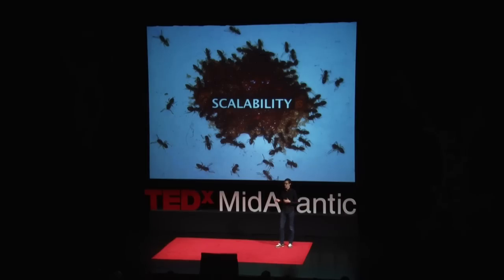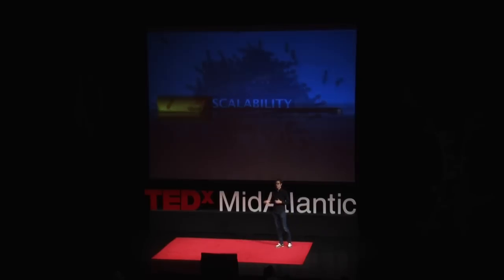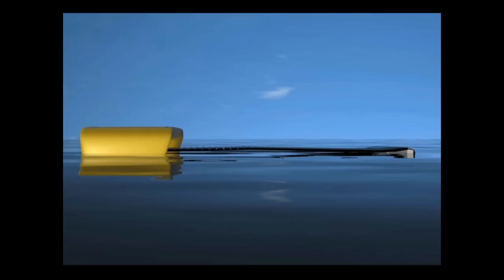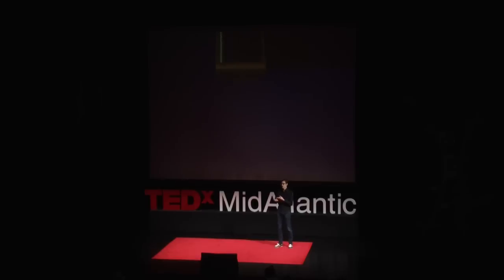So we can take the same swarming behavior that we're seeing in nature and apply it to robots. We can use algorithms and sensors, Wi-Fi and GPS. Just like ants, the robots can operate as a single entity or they can come together as a swarm and they can share information with each other. They can share things like weather patterns and oil spill locations.